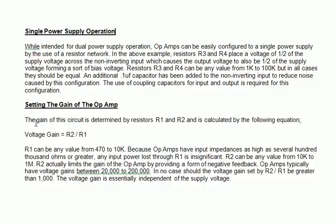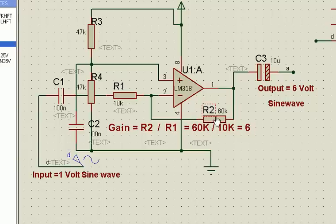Setting the gain of the operational output, the gain of the circuit is determined by R1 and R2. This is calculated by the following equation. The voltage gain is equal to R2 by R1.